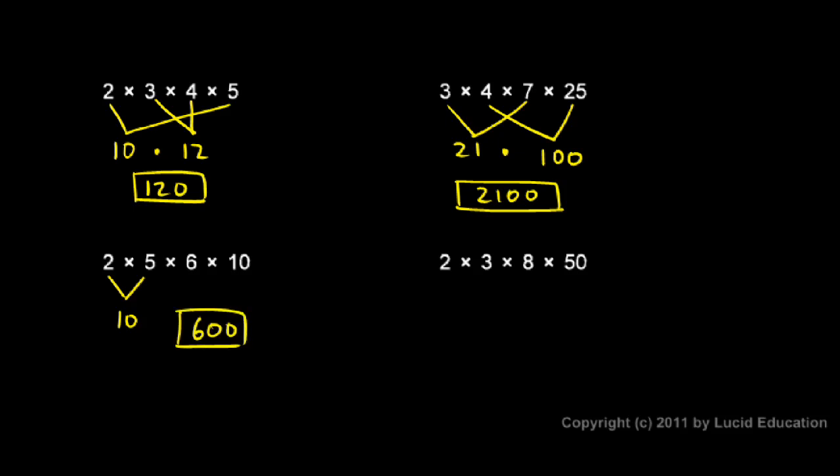And then over here, when I look at these numbers, I see the 2 and the 50. 50 times 2 gives me 100. And so I'll have 100 times 3 and times 8. 8 times 3 right there is 24, so I have 100 times 24. And again, I can do that in my head: 2400.